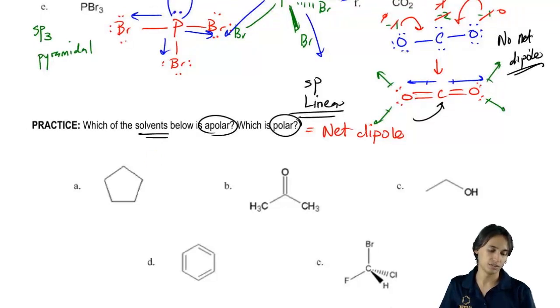So this would be apolar. There's no net dipole. B does have a net dipole pulling up, so B would be polar.